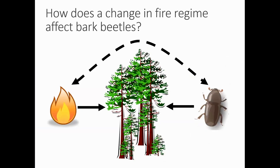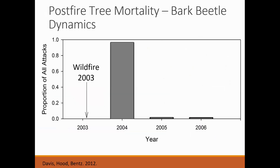A big part of my research is thinking about how a change in fire regimes will affect bark beetles. We know that fire and bark beetles have direct influences — shown with solid arrows — on forest structure and composition, but they can also have indirect effects. This research got started from my work looking at post-fire tree mortality, where we were tracking trees killed and tracking mortality over time after a 2003 wildfire, and also tracking which trees were attacked by bark beetles.